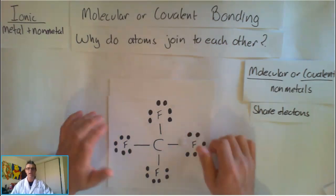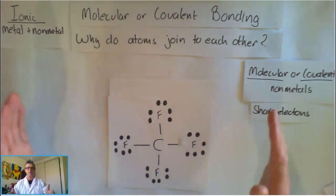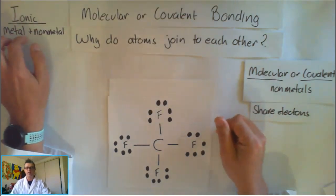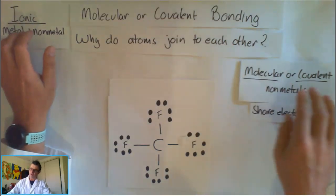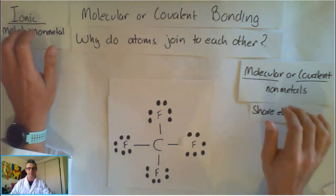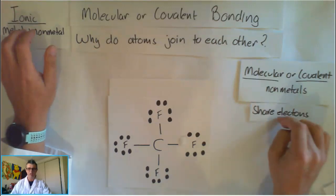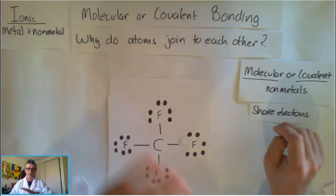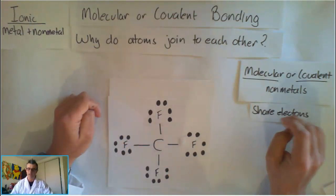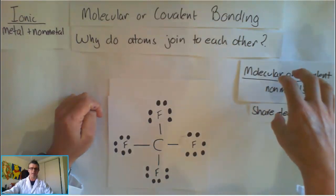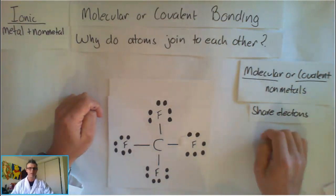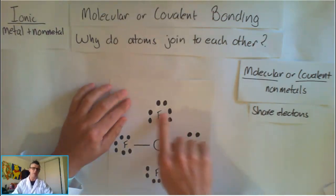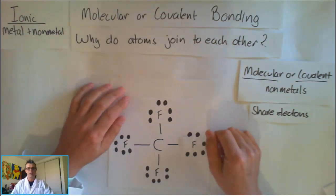So just to go over a few things: why do atoms join together? Because they want a full valency shell. We've spoken about ionic bonding - the fact that it's between a metal and a nonmetal. Molecular or covalent bonds are always between nonmetals. They share electrons. Remember, nonmetals will only ever take on electrons, they won't give them away, because of their electronegativity. So molecular or covalent bonds are always between nonmetals and they share electrons. To represent that, we've got our Lewis dot diagrams. Look forward to seeing you in the next video.